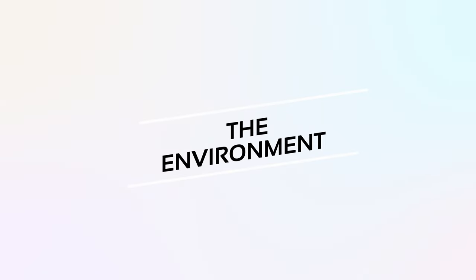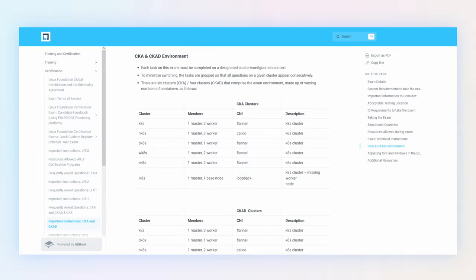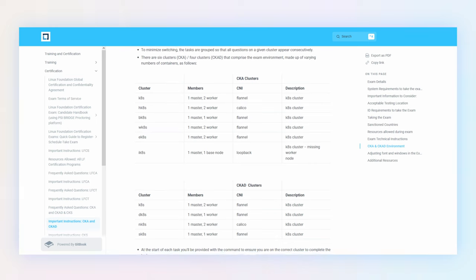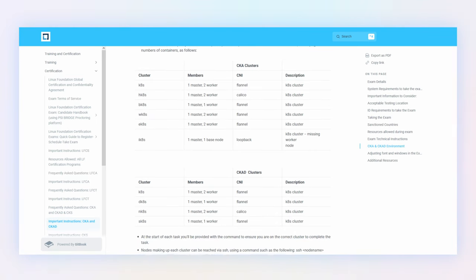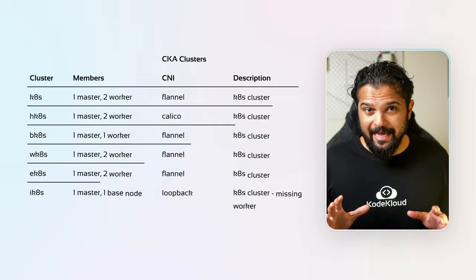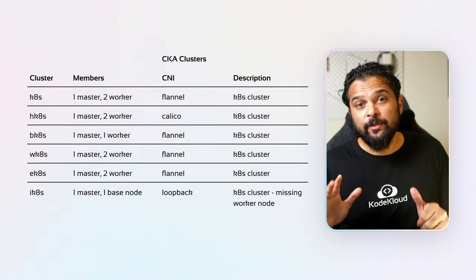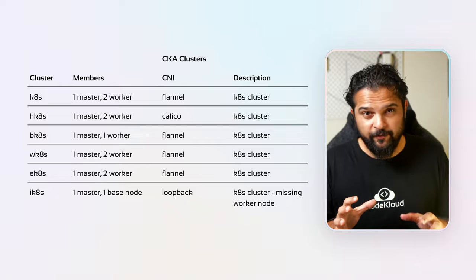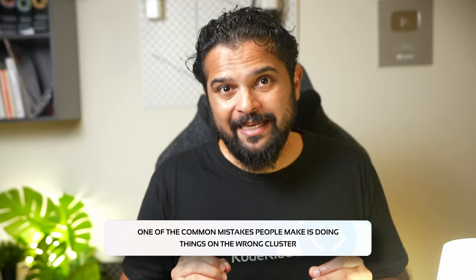Now let me share a little bit about the environment itself. Everything I'm going to share here is already available on the CNCF website on the CKA exam FAQ section — links are given below. The CKA exam environment has six clusters, each with its own set of nodes. You will be required to switch contexts between each of them during the exam, so it's very important to do that before attempting each question. One of the common mistakes people make is doing things on the wrong cluster.